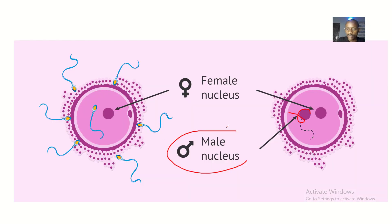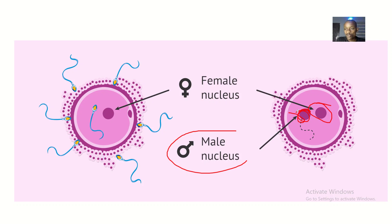Just because it comes to lie close to the female pronucleus, the head will become swollen, and other parts of the sperm will kind of be degenerating, but the head will now be increasing in size. So now it is not the normal nucleus but it is a bigger nucleus — hence they call it pronucleus.